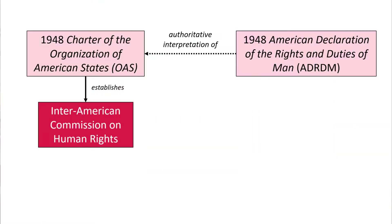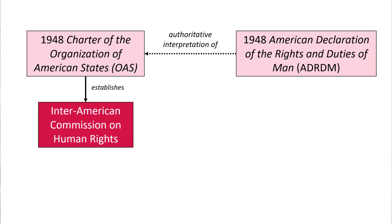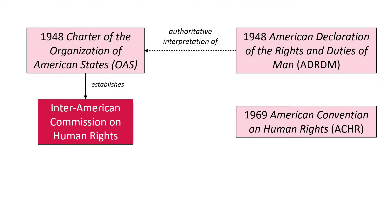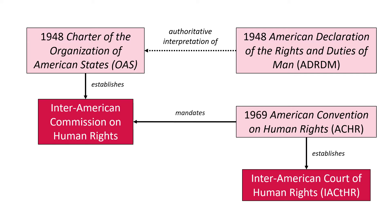In 1967, the OAS Charter was amended by the Protocol of Buenos Aires, which is very important because it creates the Inter-American Commission on Human Rights. At that time when it was originally created, it was not yet able to receive and review any individual communications. This changed only two years later with the adoption of the American Convention on Human Rights, which established the Inter-American Court of Human Rights and expanded the mandate of the Inter-American Commission on Human Rights to most notably include individual communications.